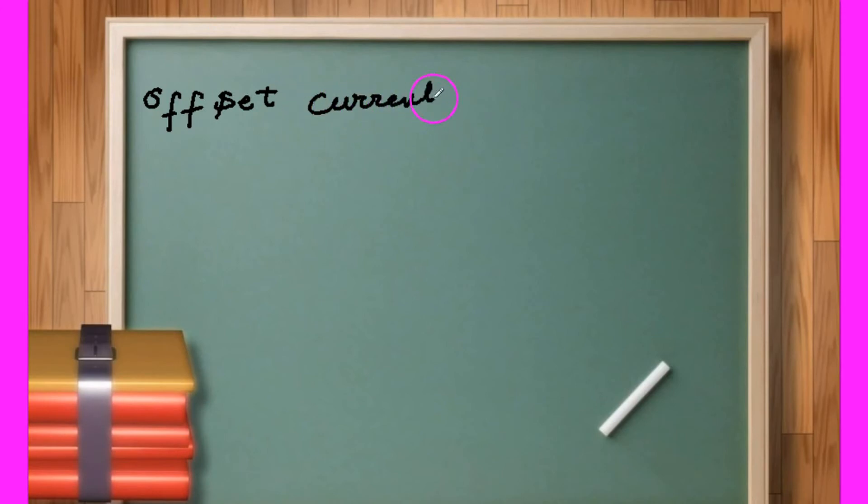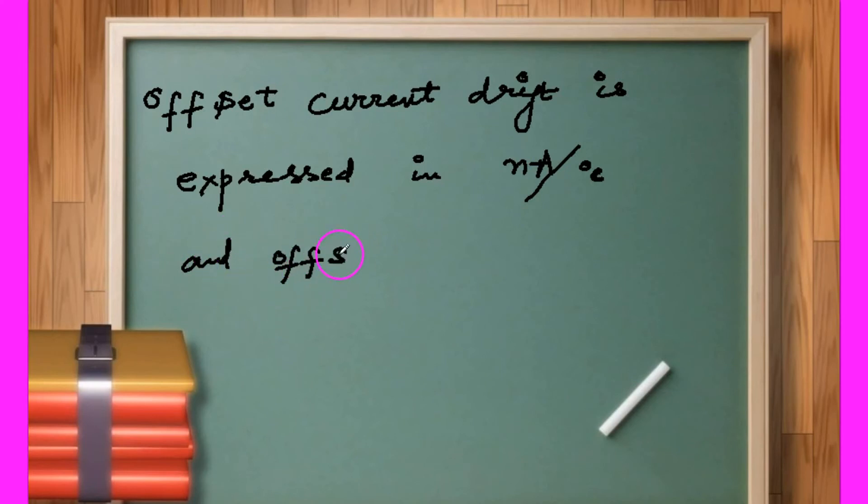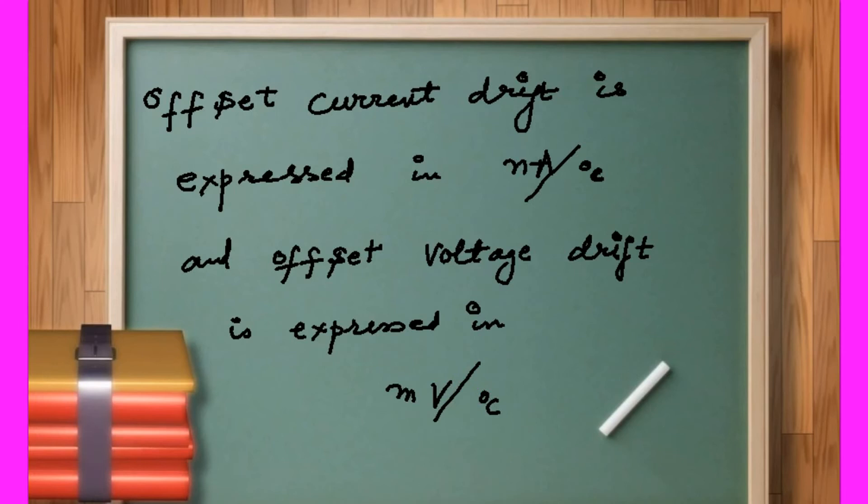Offset current drift, it tells us with 1 degree Celsius change, how much the offset current will drift, it will change, that is in nanoampere. With 1 degree Celsius, how much it changes in nanoampere, and with 1 degree Celsius change in temperature, how much the offset voltage drifts, that drift is millivolt per degree Celsius.